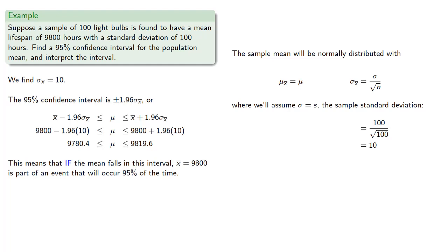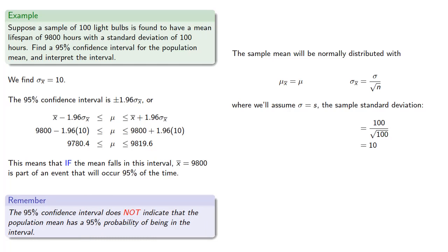Again, it's very important to remember that the 95% confidence interval does not indicate the population mean has a 95% probability of being in the interval.